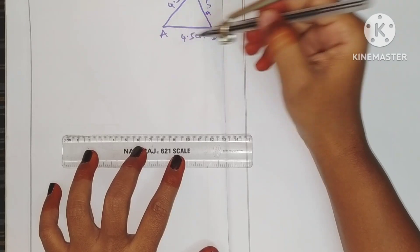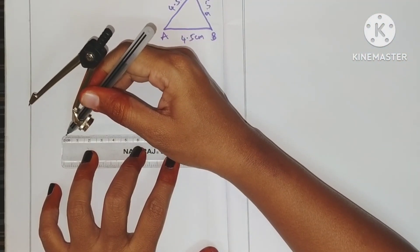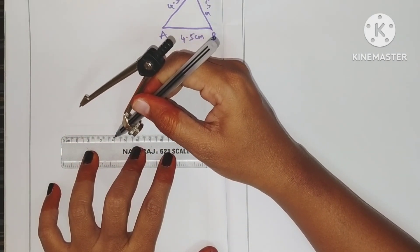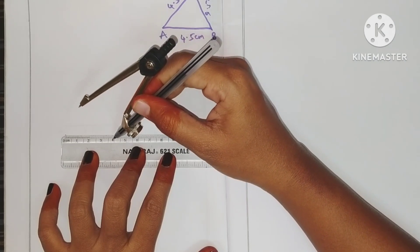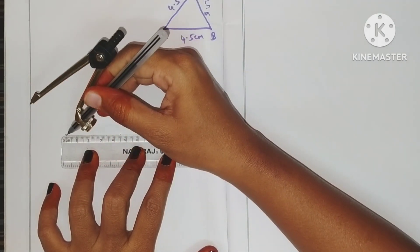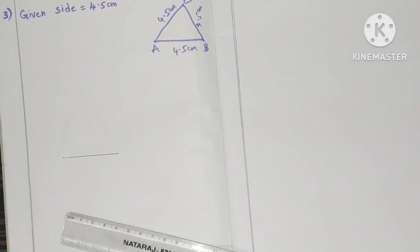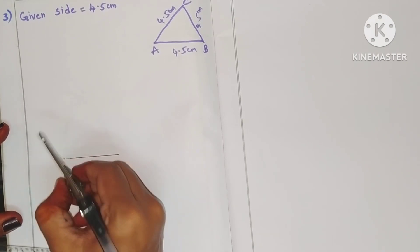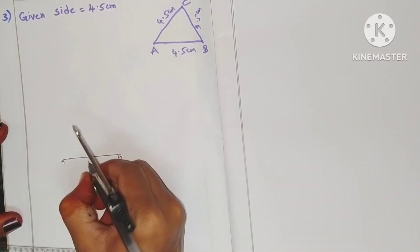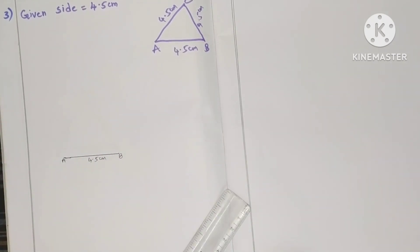First of all, draw a line segment AB of 4.5 centimeters. Put a point at zero and another point at 4.5 — that is between 4 and 5, at the fifth line. Join these two points. This is AB, which is 4.5 centimeters.